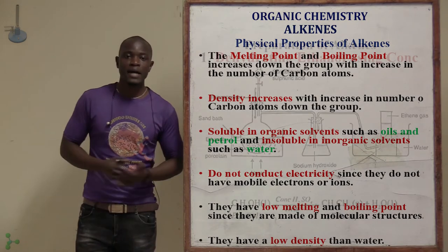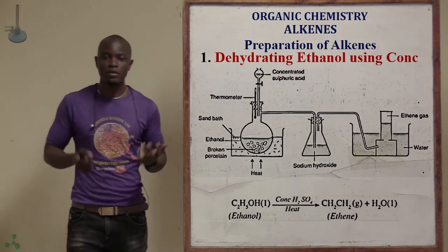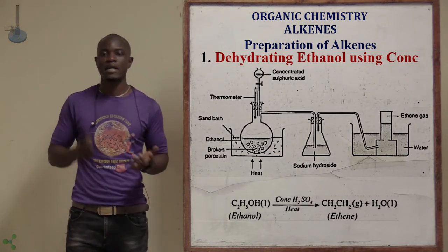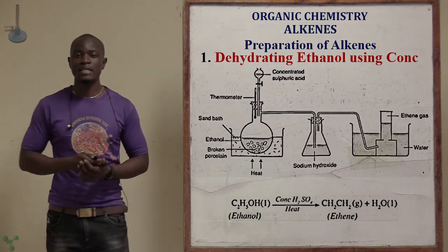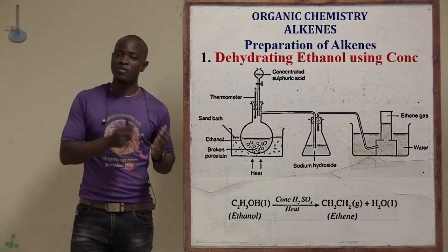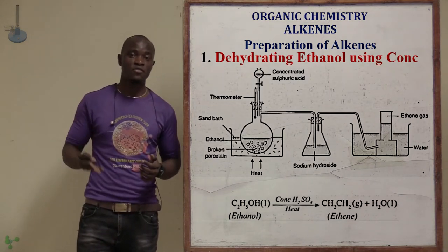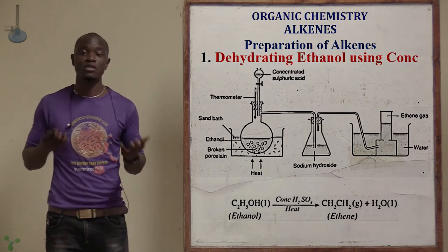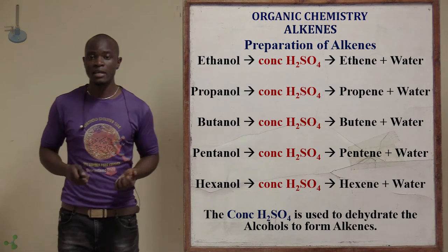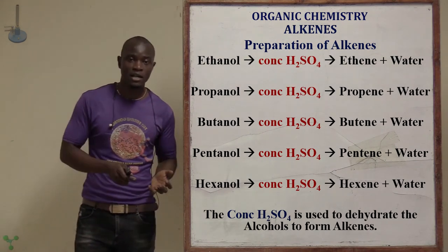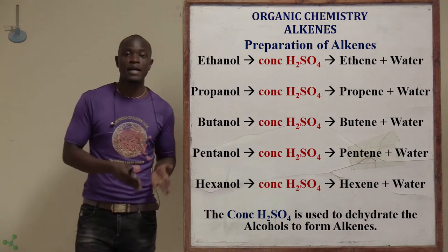So how do we prepare alkenes? Alkenes can be prepared by dehydrating ethanol with concentrated sulfuric acid. In the chemistry laboratory, concentrated sulfuric acid is a chemical which is mainly used in the drying of different components. In this case, we can prepare an alkene by dehydrating ethanol with concentrated sulfuric acid in order to prepare ethene.